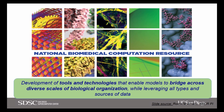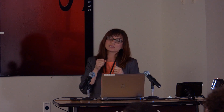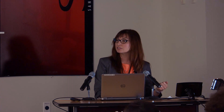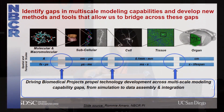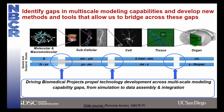The objective of the NBCR resource — a project funded as a P41 from NIH — is the development of tools and technologies to bridge across scales of biological systems and organization. Access to all kinds of data and leveraging that data in workflows has been one of our innovations. We are going from molecular scale to the organ scale, both spatially and temporally, and there are many interaction points or gap points between these scales.